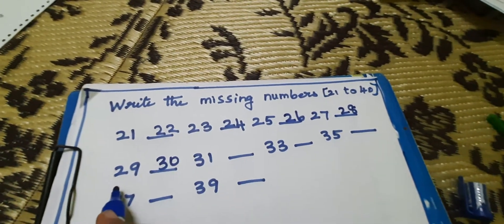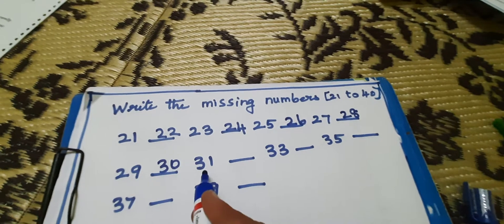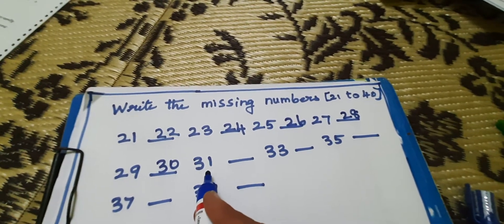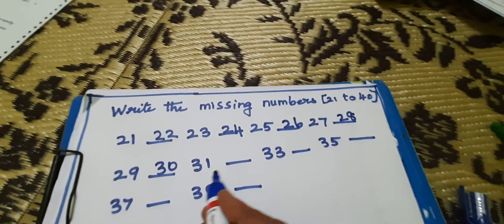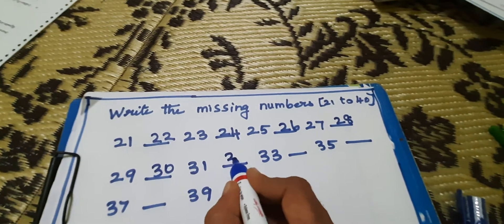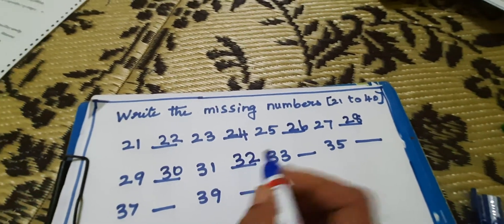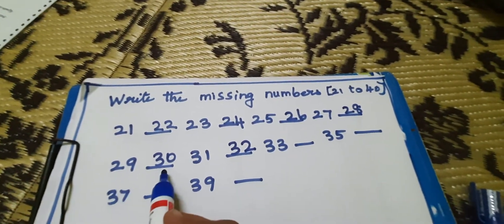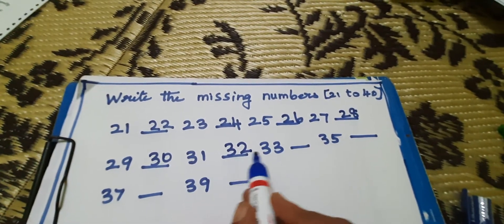29, 30. 31, 31. After 31, 32, 32. 29, 30, 31, 32.